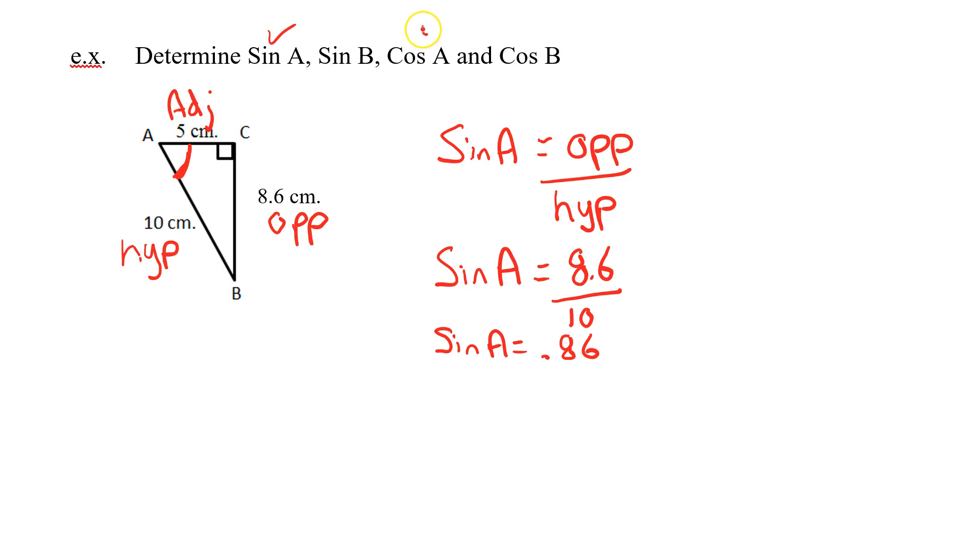So I'm going to write here the cos of A is the adjacent divided by hypotenuse. So these formulas need to kind of be familiar to you. You should be able to pull them out at a moment's notice. So cos of A is adjacent divided by hypotenuse.